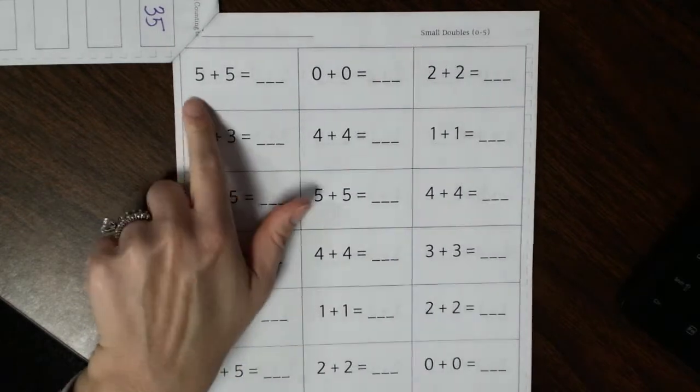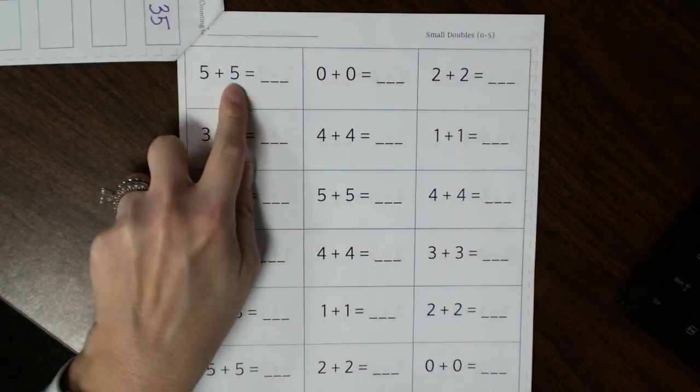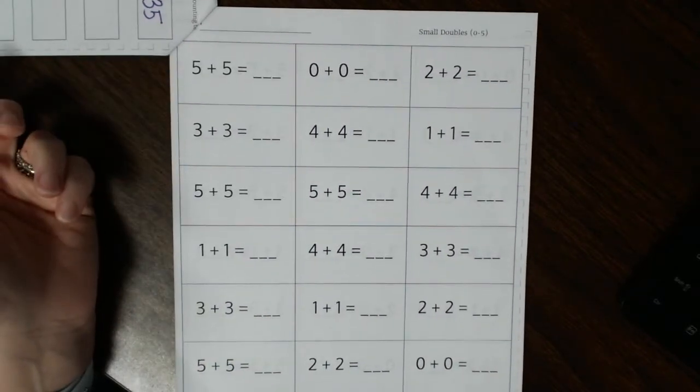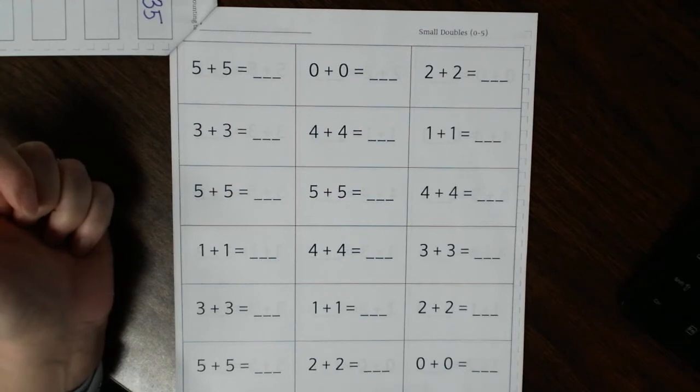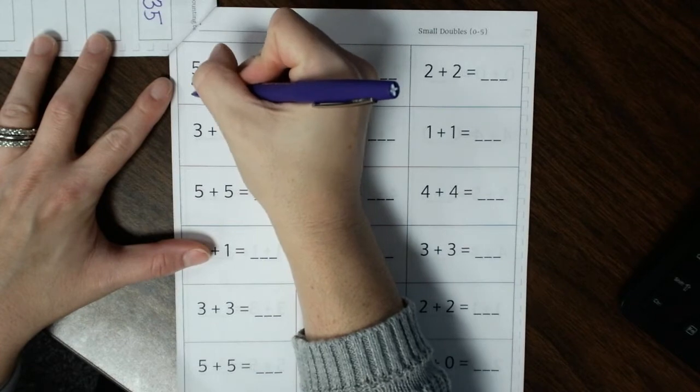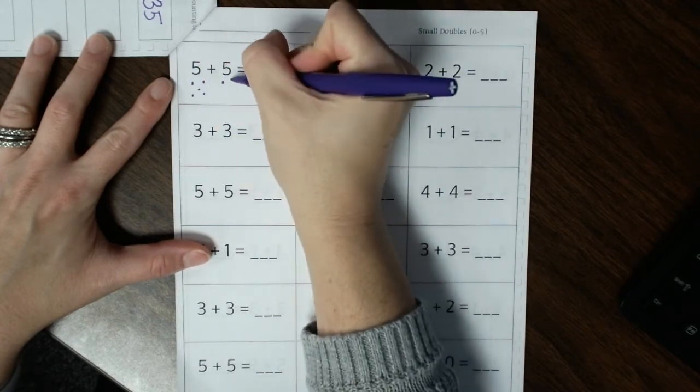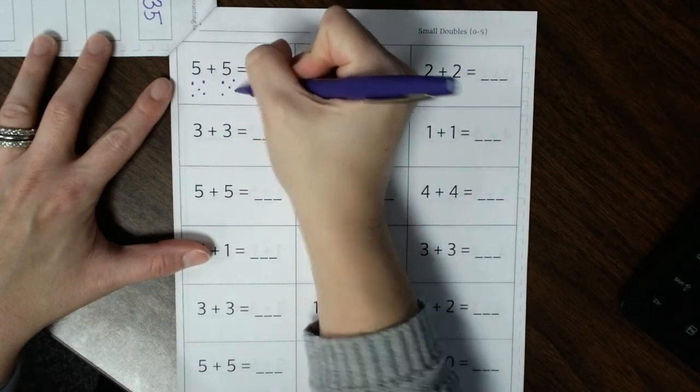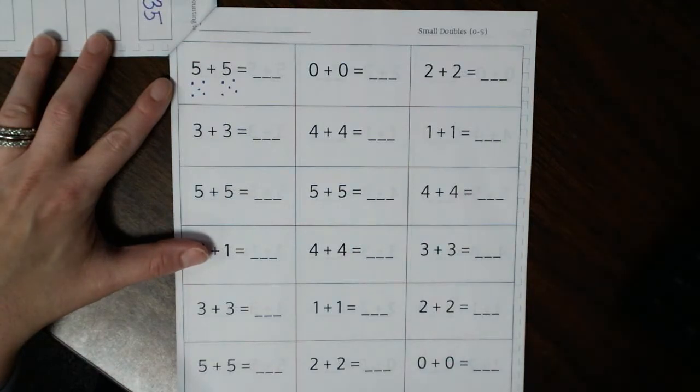So we're going to say, okay, what is 5 plus 5? Well, I don't know. So there's one of two ways. You can draw your dots underneath. You can draw five dots underneath and then count each dot. Or you may already know what 5 plus 5 is, and you can tell me.